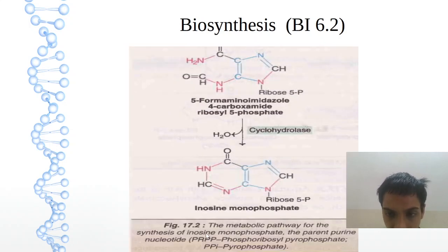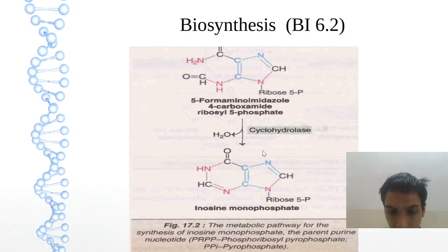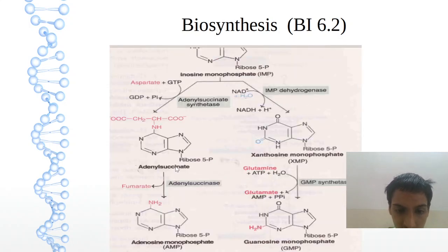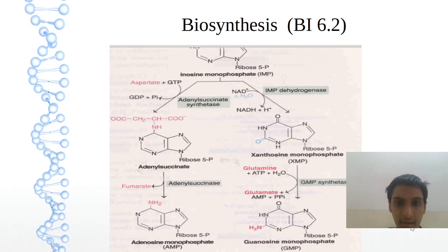On formyl transferase, we find that a formyl amino group is attached. Then on dehydration, we have IMP — inosine monophosphate. The pathway then continues for the synthesis of AMP and GMP.